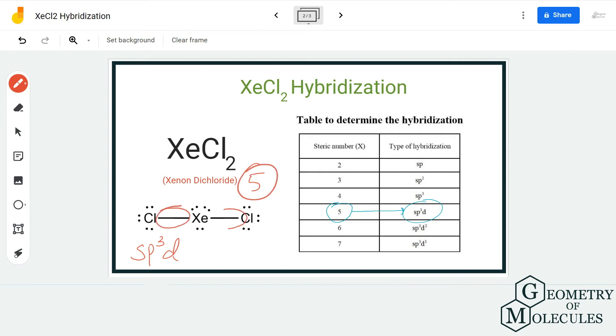these pairs of electrons. Two of them are bonding pairs of electrons, and three are non-bonding pairs of electrons. So the central atom needs to form hybrid orbitals to accommodate all the pairs of electrons that are around it, whether